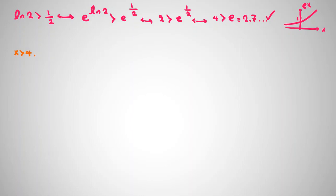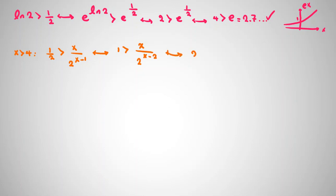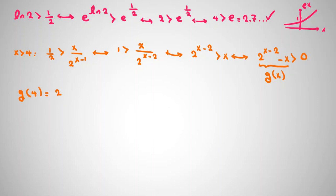For x greater than 4, we want to prove one-half is greater than x over 2 to the x minus 1. Multiplying both sides by 2, this is equivalent to 2 to the x minus 2 being greater than x, or equivalently g of x equals 2 to the x minus 2 minus x is greater than 0. We compute g of 4: it is 2 to the 4 minus 2 minus 4 equals 4 minus 4 equals 0. So if g is increasing after x equals 4, then g of x is always positive there.